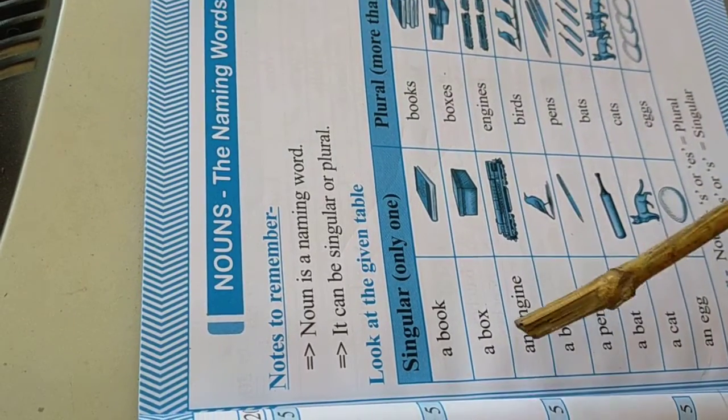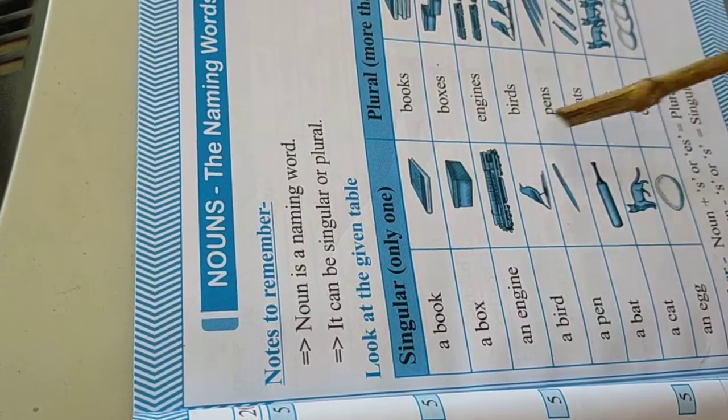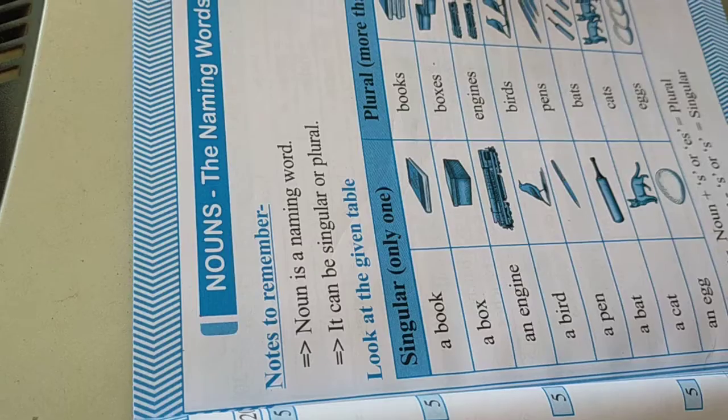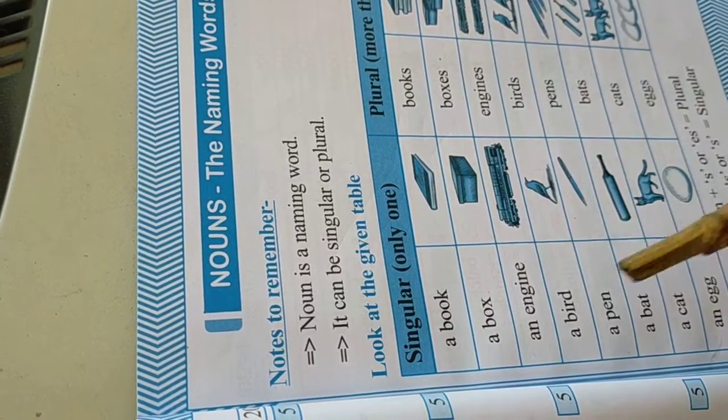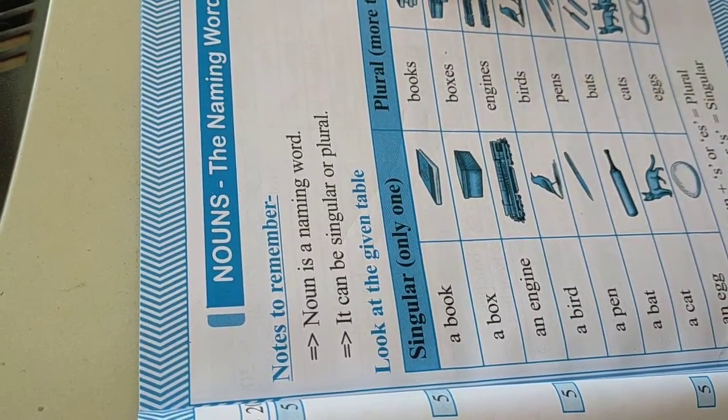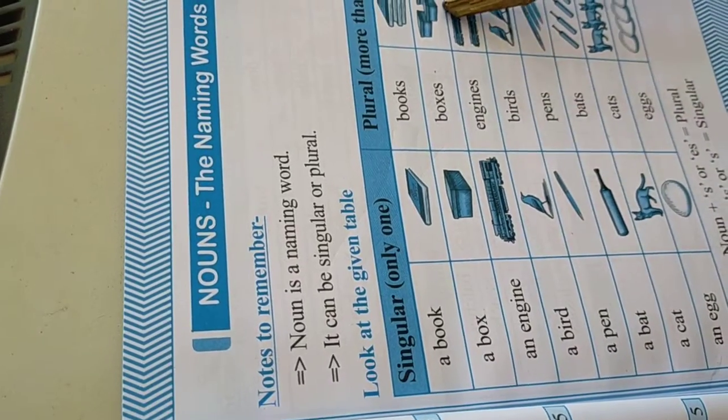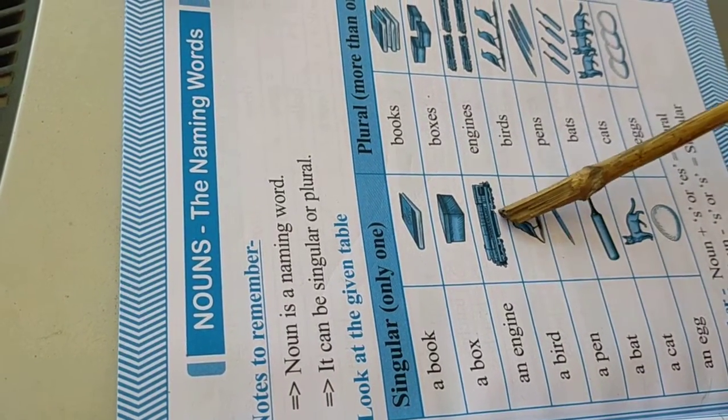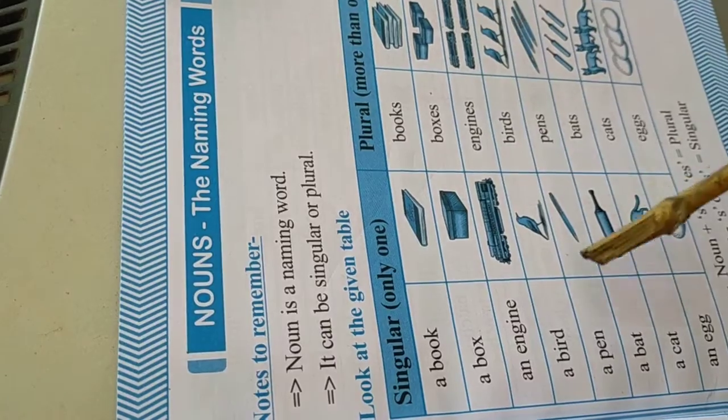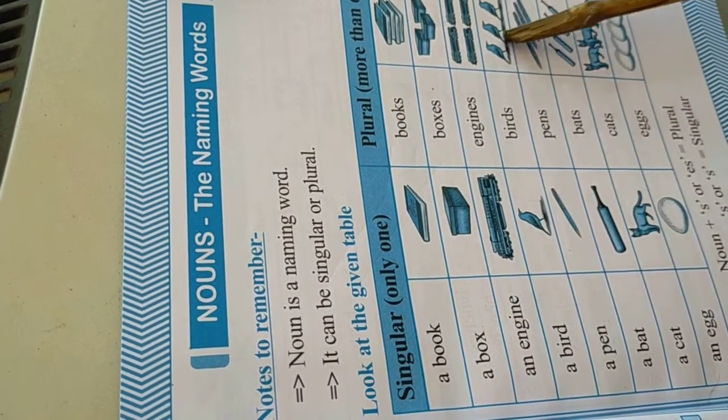These are the singular and plural forms given for your knowledge. Here is one book and here are four books. Here is a box and here are three boxes. Here is an engine, there are four engines. Here is a bird and there are three birds.